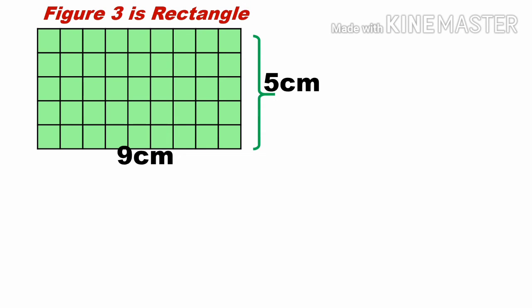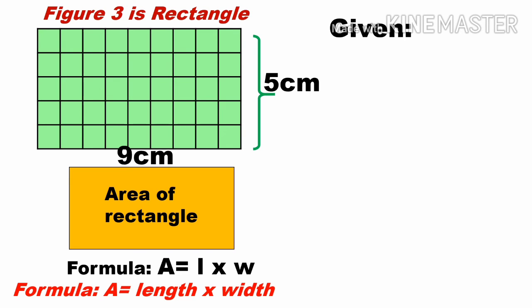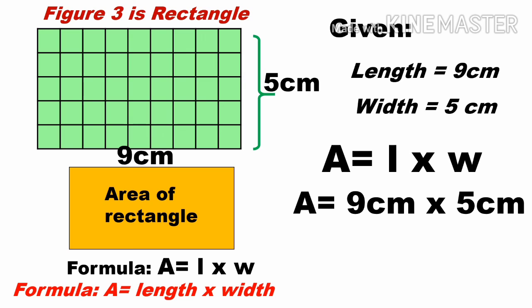Now let's find the area of figure three, which is a rectangle. The length is nine centimeters and the width is five centimeters. Using the formula A equals length times width, we substitute: A equals nine centimeters times five centimeters, which equals 45 square centimeters. Therefore, the area of the third figure is 45 square centimeters.